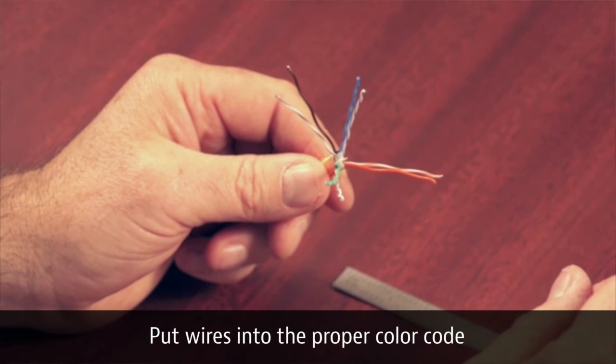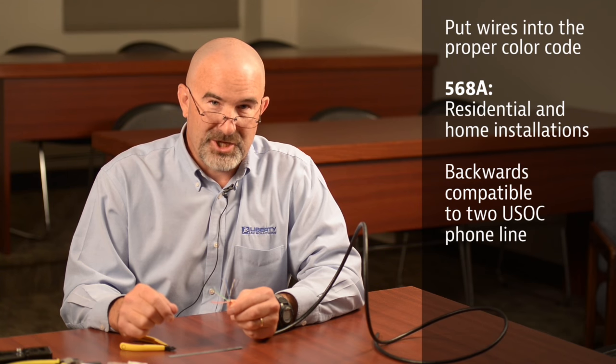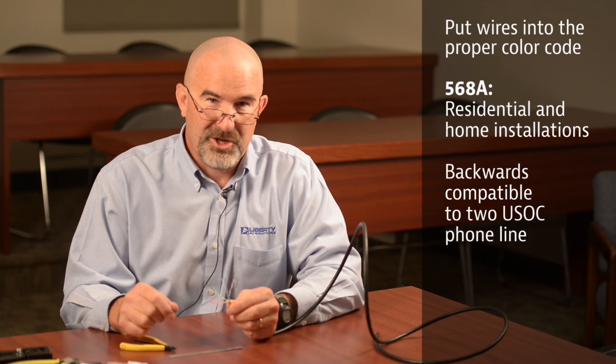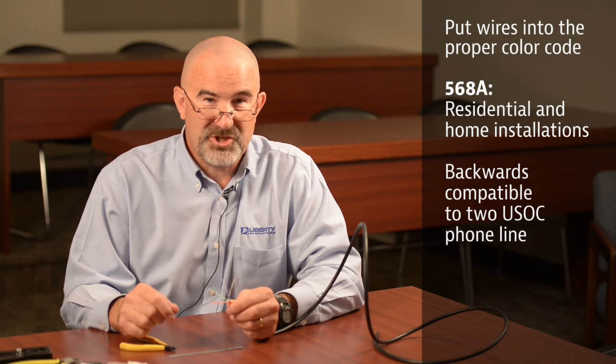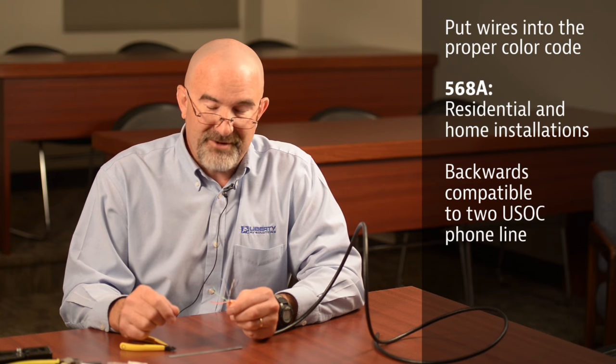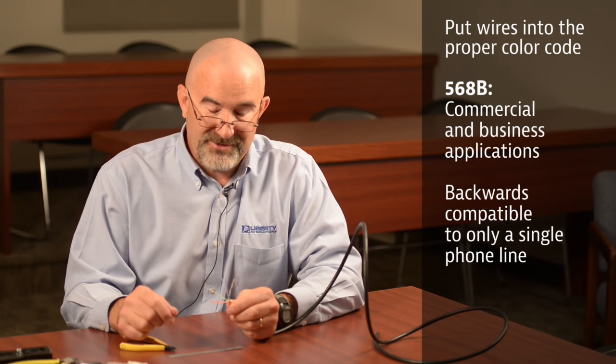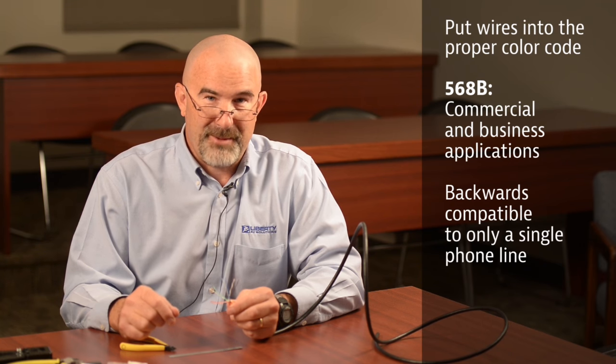Once you have these conductors straightened out, the next step is to put them in the proper color code. We're going to use 568B for our color code. 568A is generally used in residential type applications or home installations because it's forward or backwards compatible to the USOC two phone lines. 568B is only backwards compatible to a single phone line, so it's used primarily in businesses and commercial type applications.